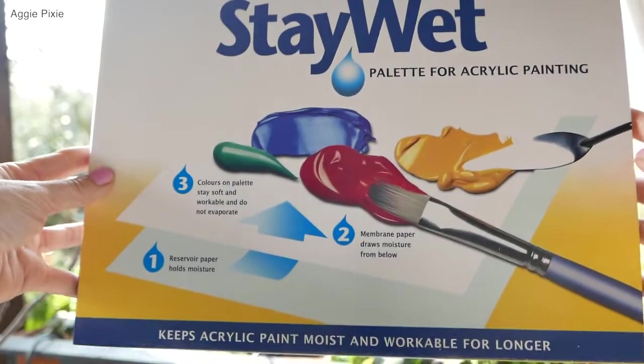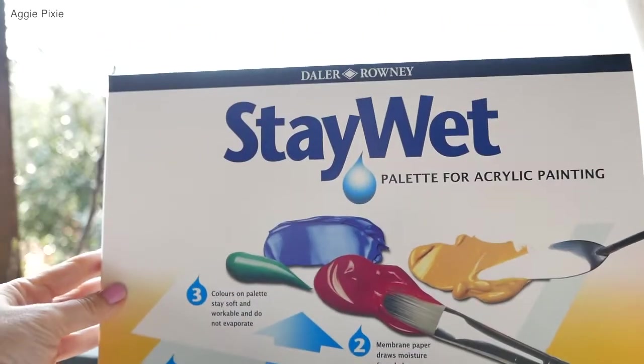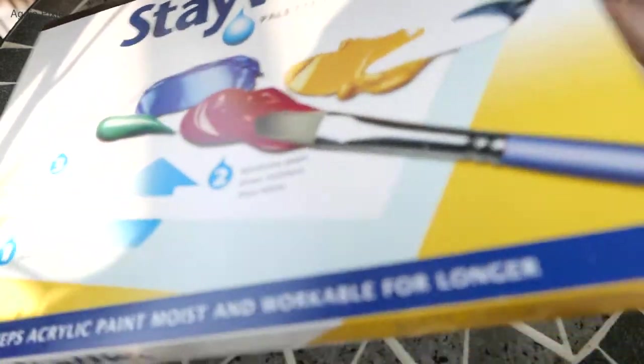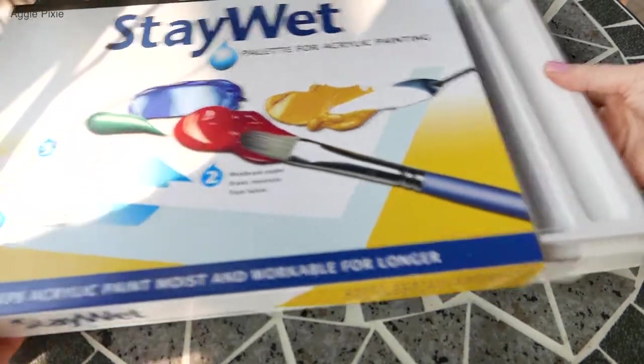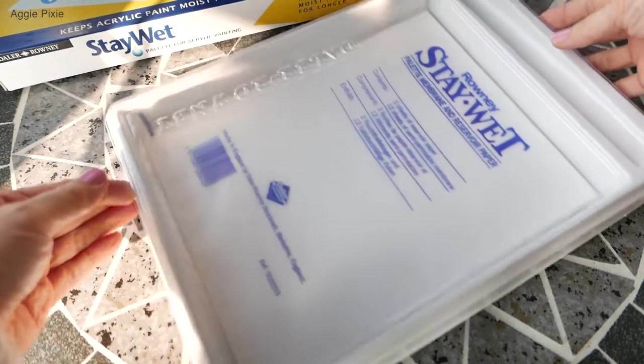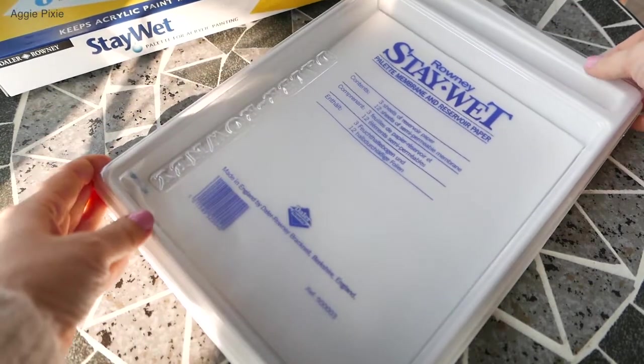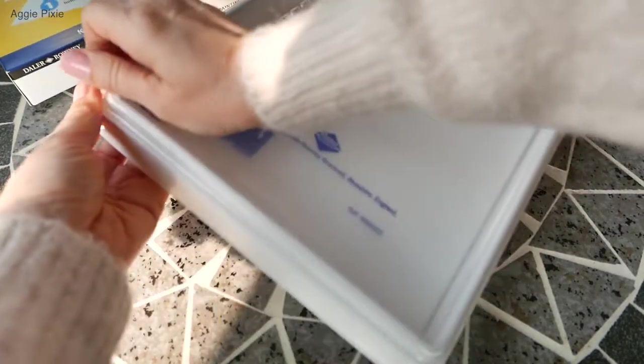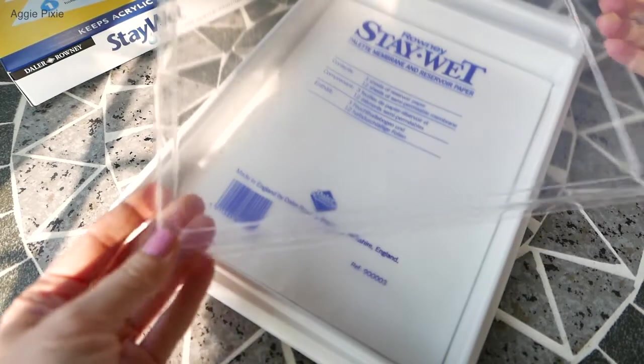So I'm so excited I finally bought this Stay Wet palette. This is from Daler and Rowney. It's a palette for acrylic painting that makes your acrylic paint stay wet for longer. This is the first time I'm taking it out of the box and it's very sturdy. It's a very hard plastic and it has a very sturdy cover which I like.